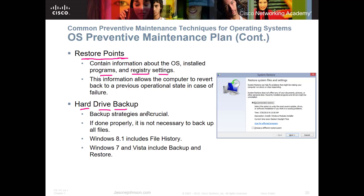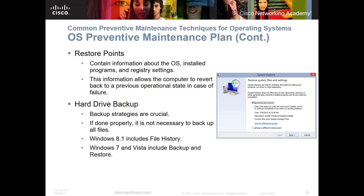Backup strategies are crucial. If done properly, you don't need to back up all files every time — you can do incremental or differential backups. We don't really back up to tape drives anymore on server systems; you can back up to the cloud or an SSD drive array. Windows 8.1 includes File History, while Windows 7 and Vista included Backup and Restore. They differ slightly, so research that in the course material.